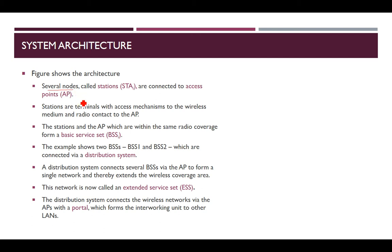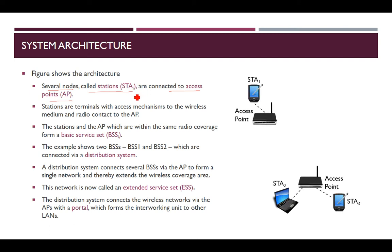In infrastructure mode, several nodes — called stations — are present. All nodes are basically called stations, represented as STA-i where i can be 1, 2, 3, and so on. Every station is connected to an access point (AP). Here I am showing two such architectures: one access point with STA1 connected to it, and another access point with STA2 and STA3 connected to it.